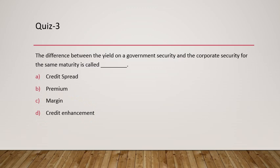Question 3: The difference between the yield on a government security and a corporate security for the same maturity is called what? Government typically borrows at the cheapest rate; corporates borrow at a higher rate than government, and there is always a difference between the two. That is something we call the credit spread.